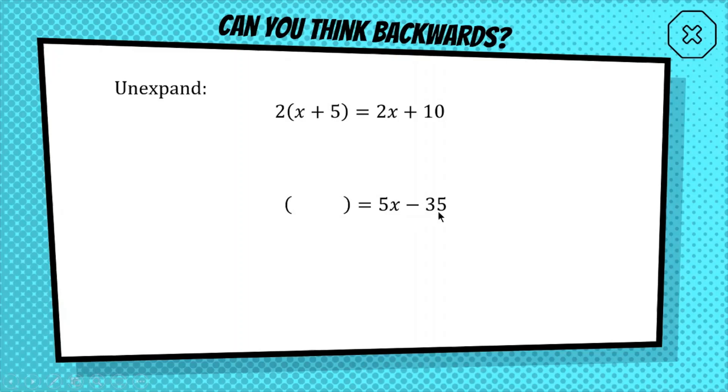Obviously, 1 is an answer, but that's very boring. If you can see that there's a 5 multiplying in both of these, because this is 5 times x, and this is 5 times 7, that's good. We have identified what our factor is. That is what's going to go at the front, the 5.